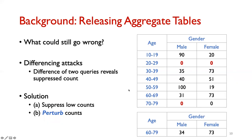This suppression is still not secure because an attacker could launch a differencing attack. The attacker could ask for males in age range 60 to 79, getting 34, then ask for age range 60 to 69 and get 31, and by subtracting the two, recover the suppressed answer.